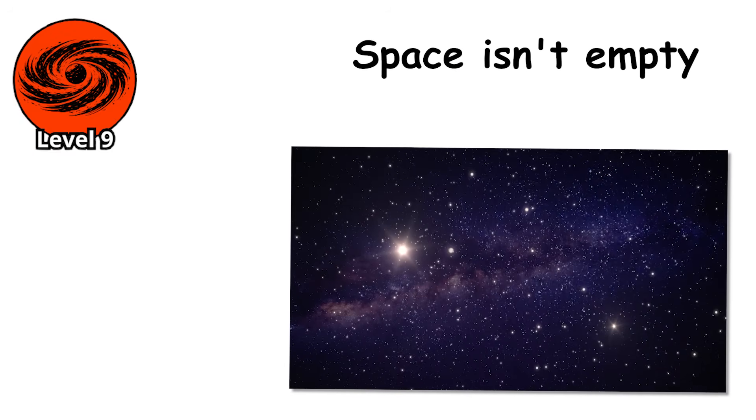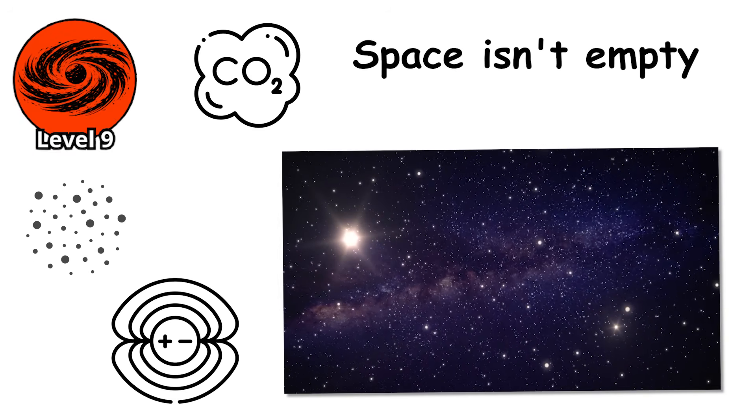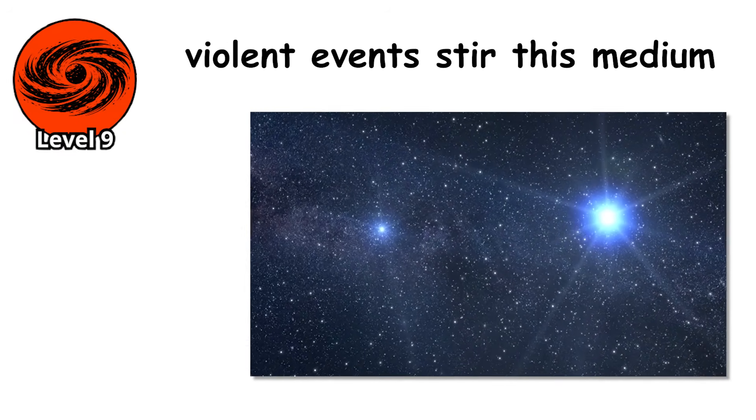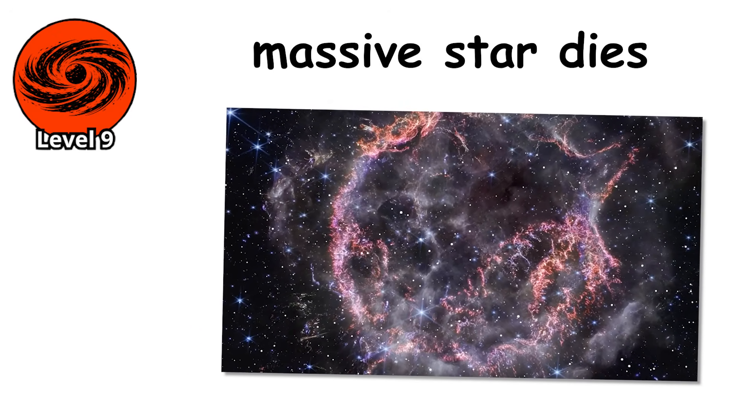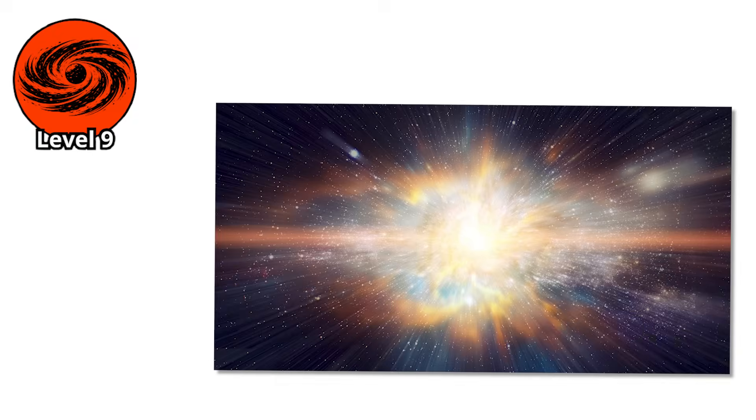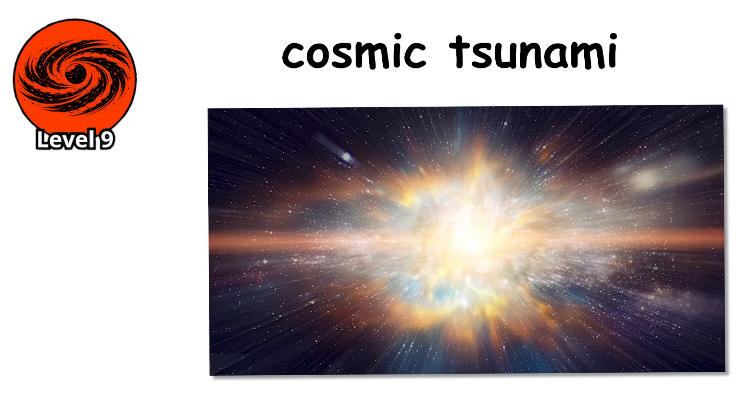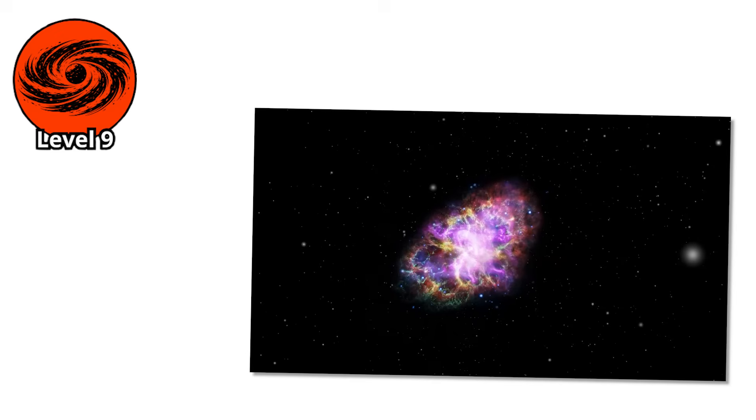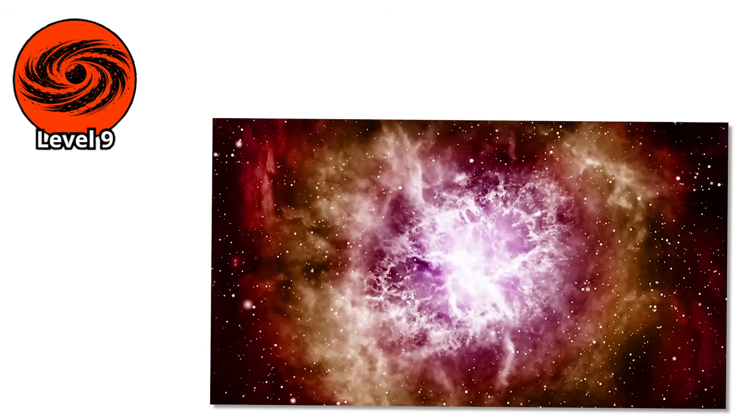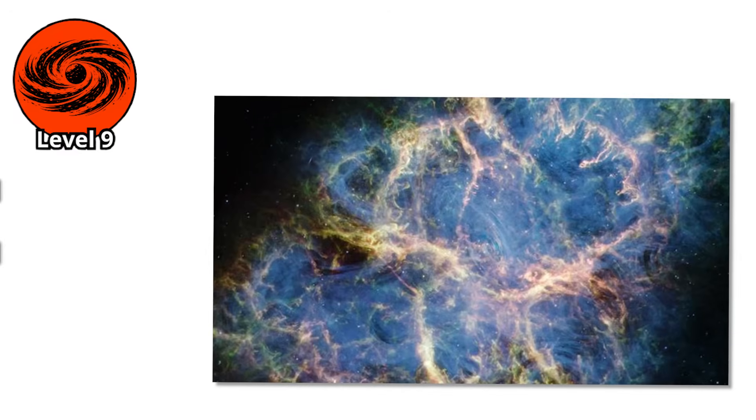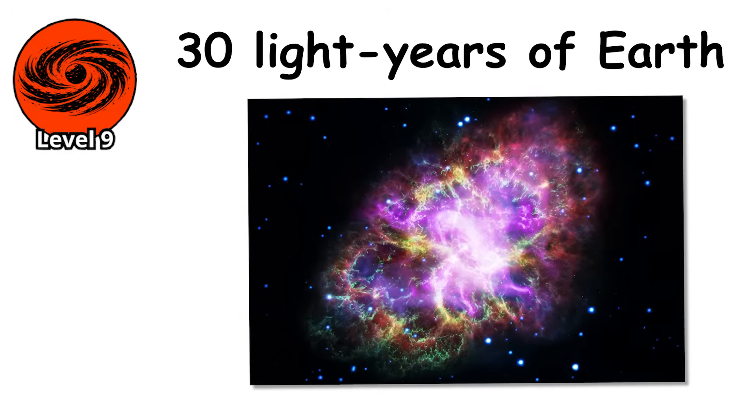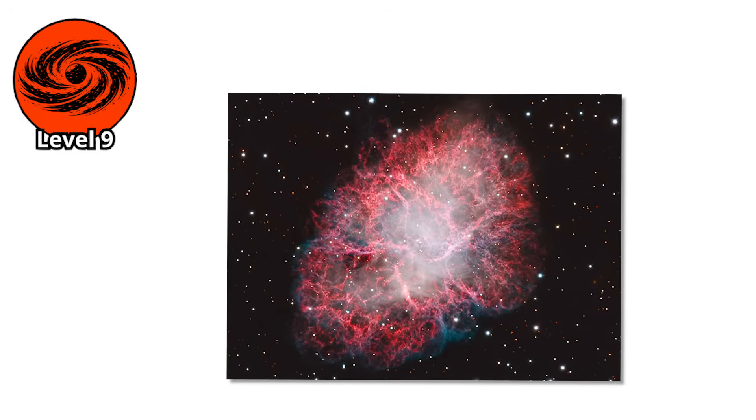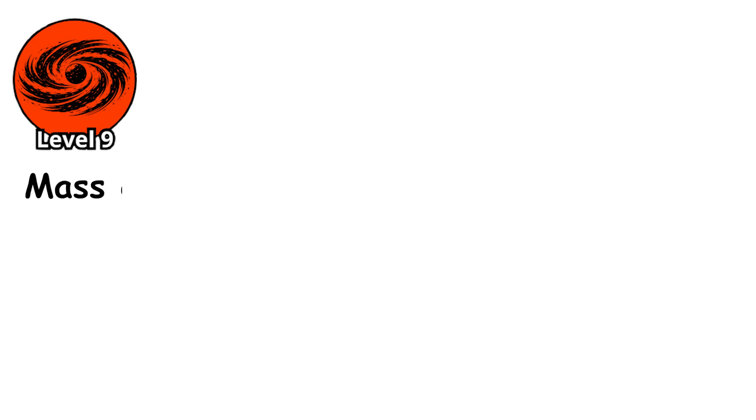Level 9. Space isn't empty. Between the stars there's gas, dust, and magnetic fields, a thin interstellar medium that's constantly in motion. And sometimes violent events stir this medium into storms that span light-years. Supernova explosions are the most dramatic example. When a massive star dies, it ejects its outer layers at speeds exceeding 20,000 miles per second, creating a shockwave that plows through the interstellar medium like a cosmic tsunami. The Crab Nebula is the remnant of a supernova that exploded in 1054 AD, bright enough to be visible during the day for 23 days. The shockwave is still expanding, still glowing, 970 years later. If a star within 30 light-years of Earth went supernova, the radiation would strip our ozone layer, exposing the surface to lethal ultraviolet radiation. Mass extinction would follow within months.